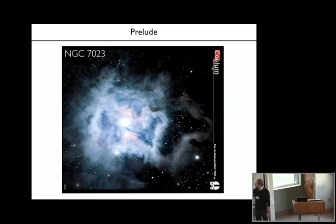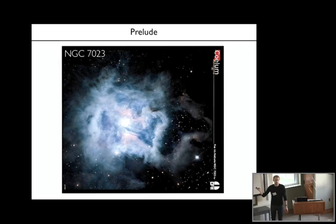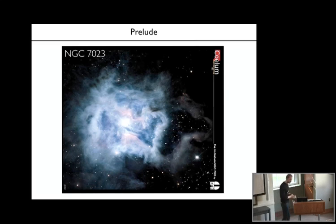In addition to the blue light, you see here—though I don't know if you can see very well—these filamentary structures which glow in red. It is believed that this red glow is due to the fluorescence of carbonaceous molecules in the nebula. This is just to describe this object that I will be talking quite a lot about in the presentation.